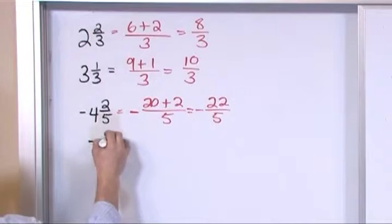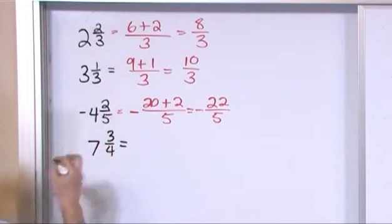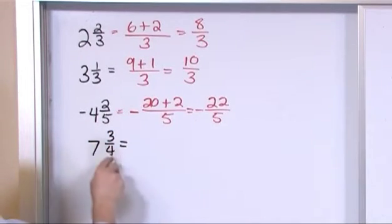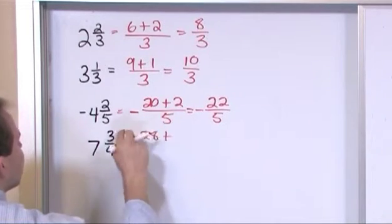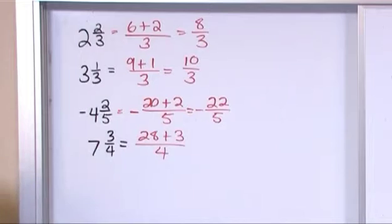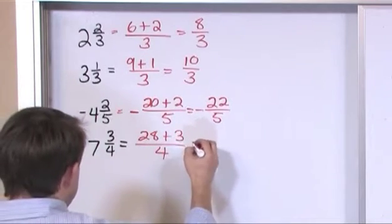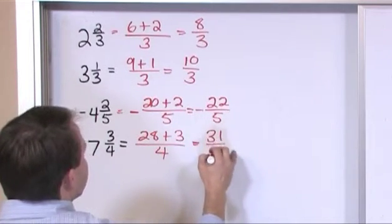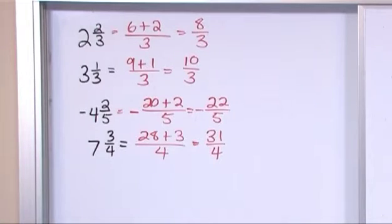Let's say you have seven and three-fourths. Start at the bottom. Seven times four is twenty-eight, plus the top which is three, divided by the bottom which is four. Twenty-eight plus three is thirty-one over four and that's the improper fraction that's equivalent.